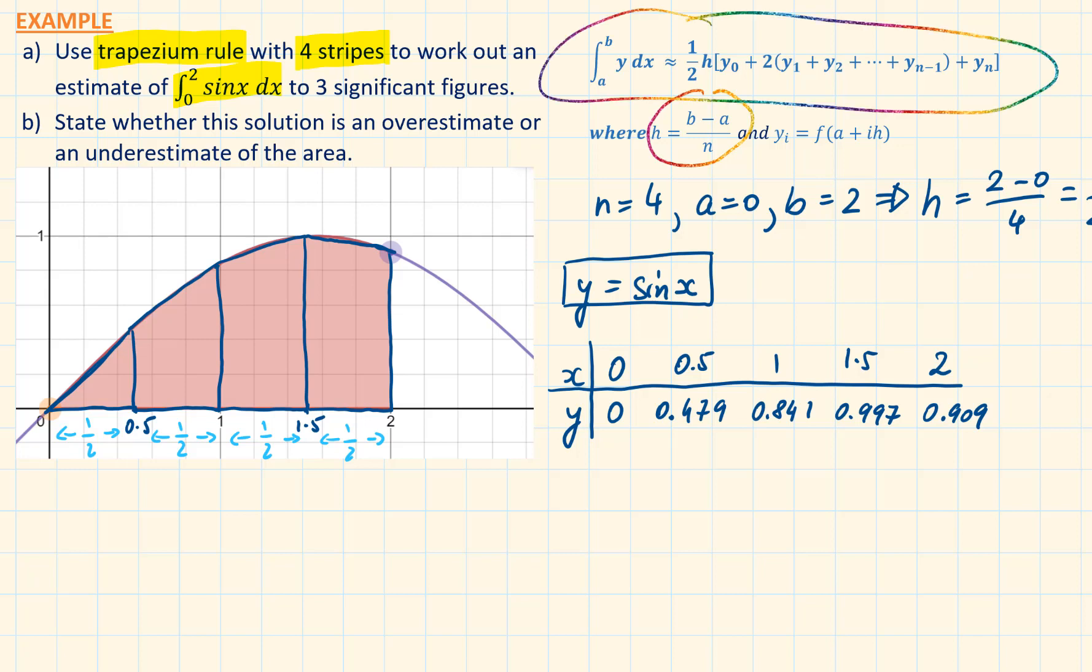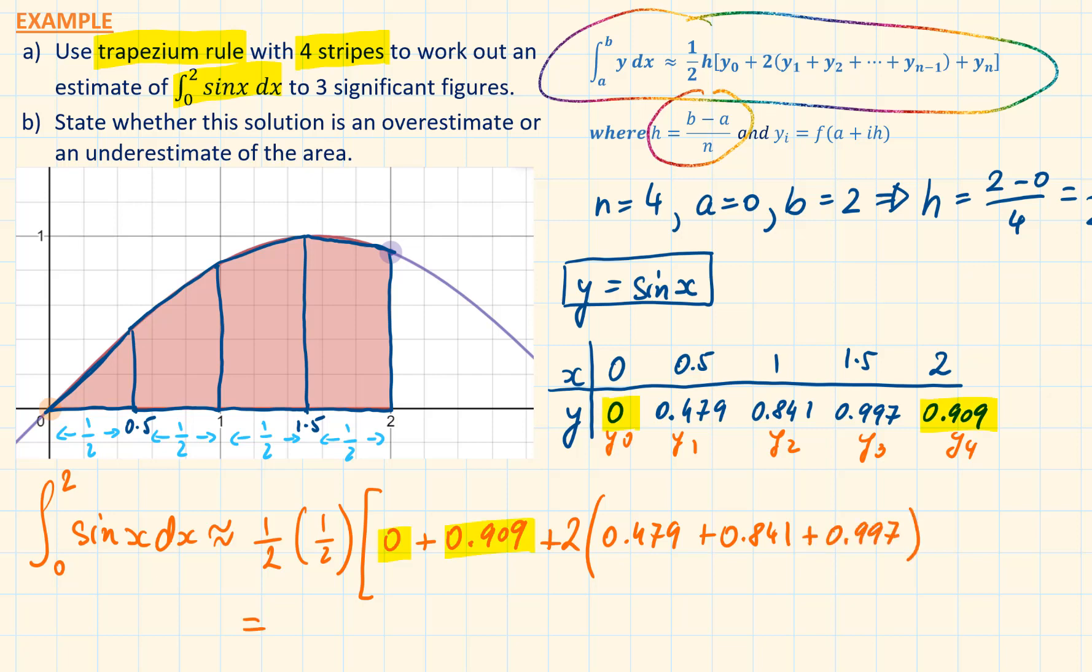Substituting the values that we have just worked out in the Trapezium rule, we will have half times half times 0 plus 0.909 plus 2 times 0.479 plus 0.841 plus 0.997. And this is approximately equal to 1.39 to 3 significant figures.